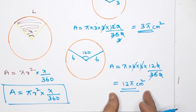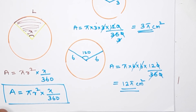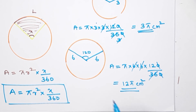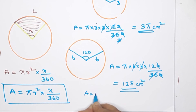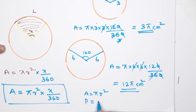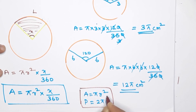I have a very important formula to remember: Area = πr², Perimeter = 2πr. The fraction used is x divided by 360. If you learn these formulas, you won't have any problems.